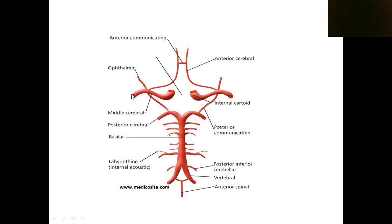The two anterior cerebral arteries are connected by the anterior communicating artery. The internal carotid artery is also connected to the posterior cerebral artery by another communicating artery — known as the posterior communicating artery. Now you can see an arterial circle forming. This arterial circle is known as the Circle of Willis.